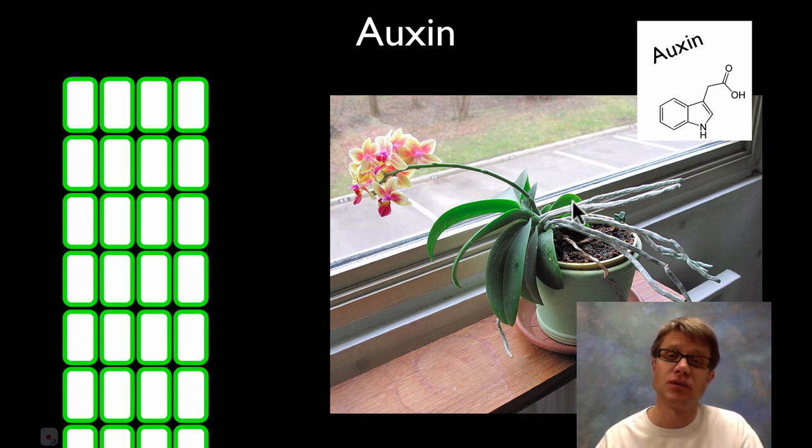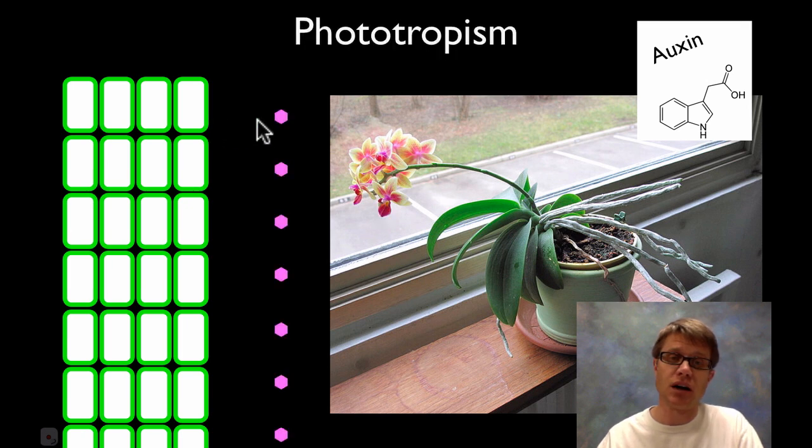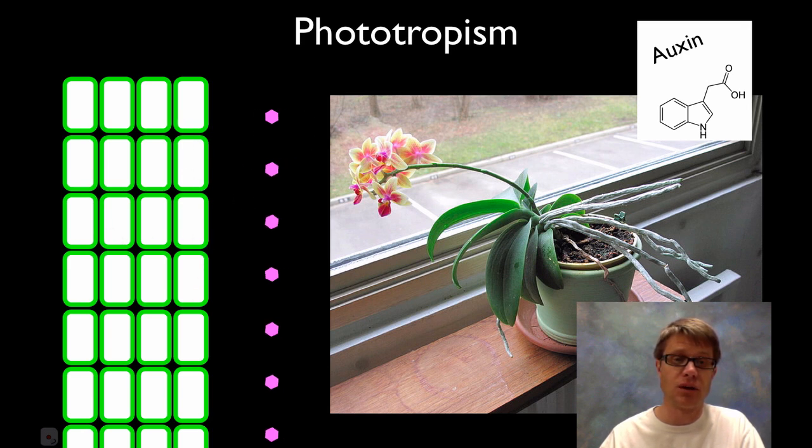So how do they do that? Well one of the first scientists ever to do any work on auxin was Charles Darwin and his son. Basically what we found out is that auxin is a chemical. Auxin will move to the shady side of a stem. So if we've got auxin here, auxin is going to migrate to the other side. If the sun was on the other side, then the auxin moves back to this side. But basically what the auxin does is it's going to loosen up the cellulose in the cell wall.